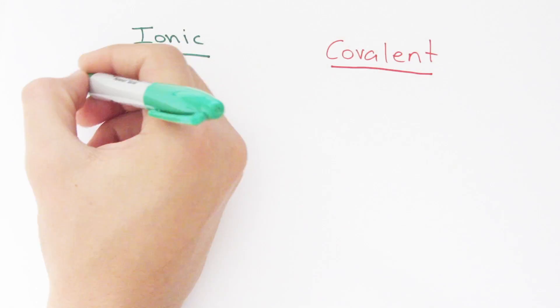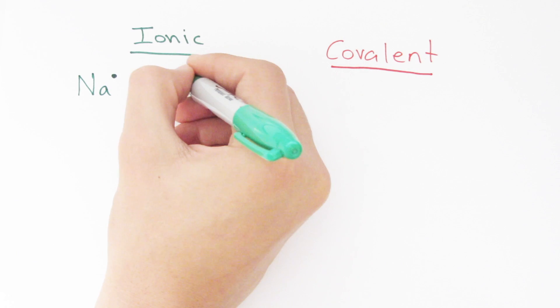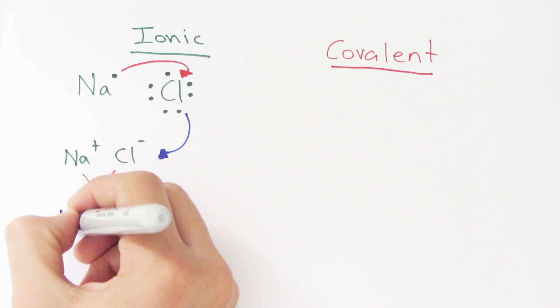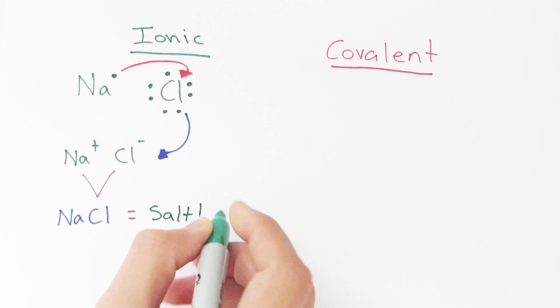An example of ionic bonding is sodium and chlorine. Sodium has one valence electron and chlorine has seven. So sodium gives that valence electron to chlorine to complete its energy level, which makes sodium a positive ion and chlorine a negative ion. They bond into sodium chloride, which is basically salt.